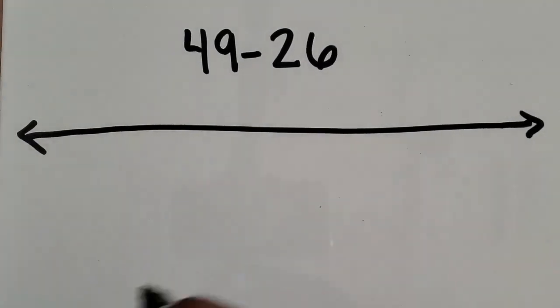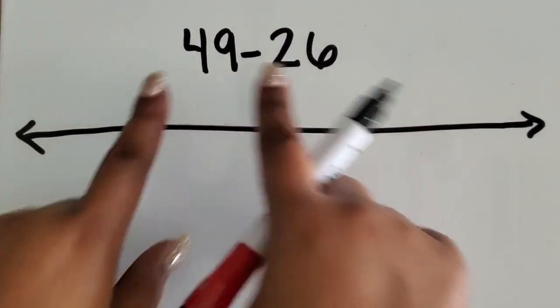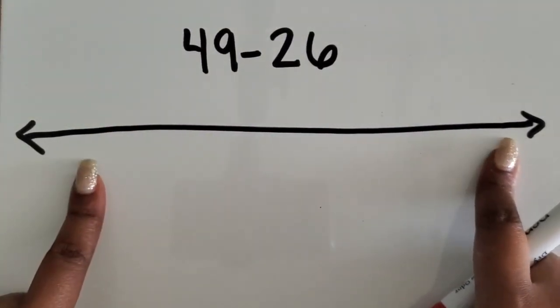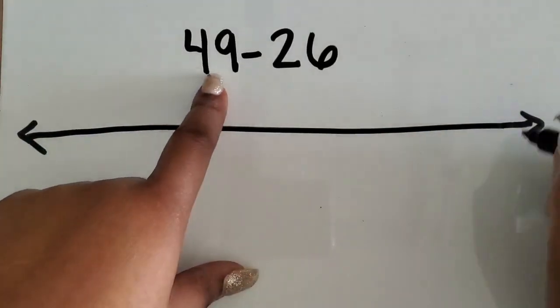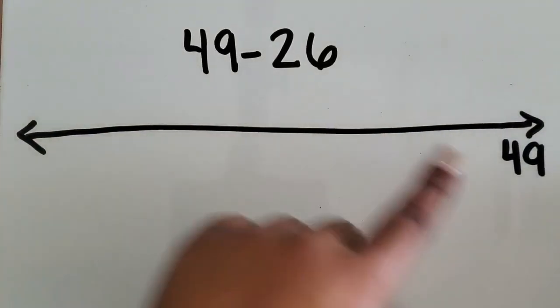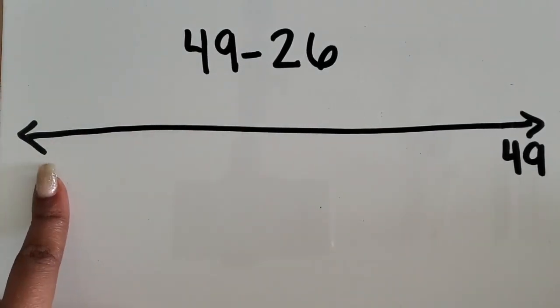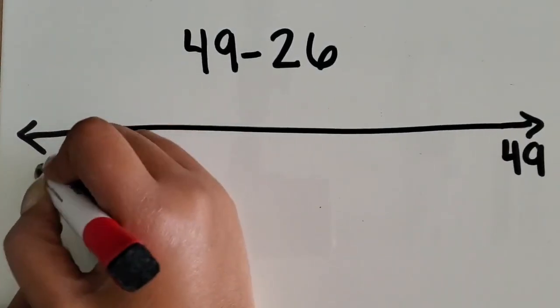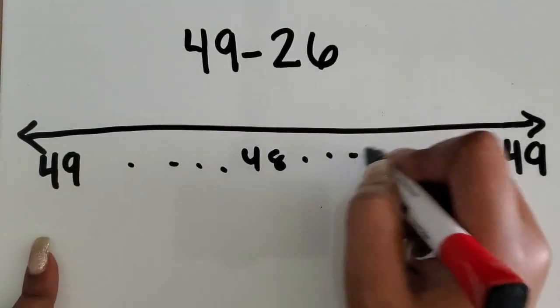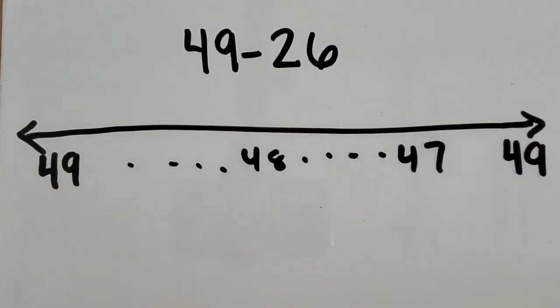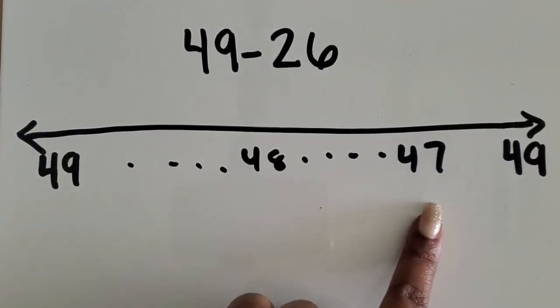I'm going to start by showing you how to count back. When you're using your number line to subtract, you want to make sure you accurately place your numbers. If you're starting with a larger number, you want to put it at the end of your number line. We don't want students to put the larger number here and then go backwards like this because that's not the direction the number line goes in.